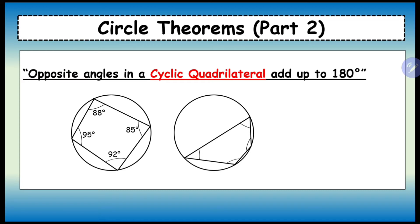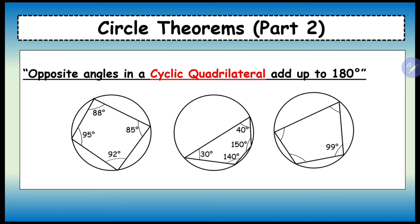Here's another example: that one's 30, that's 150, they add up to 180. If that's 140 the other should be 40, so they both add up to 180. Finally, 99 and 81 equal 180, and 77 and 103 add up to make 180 degrees.